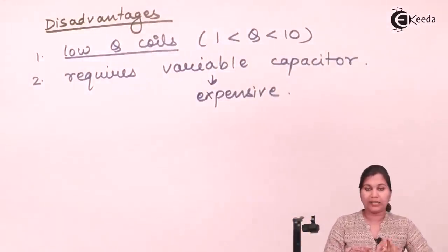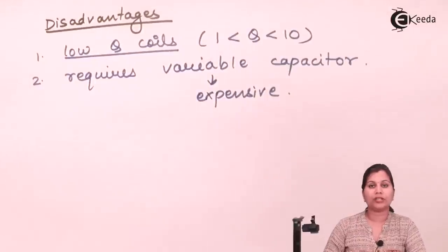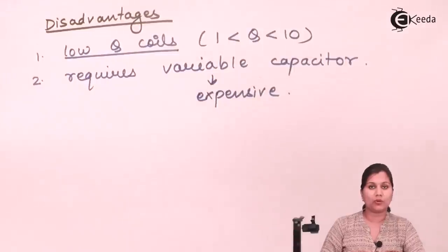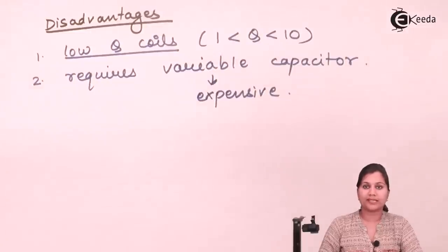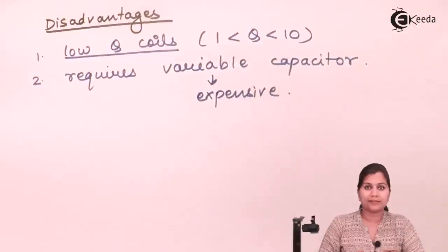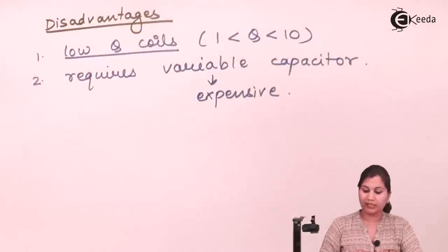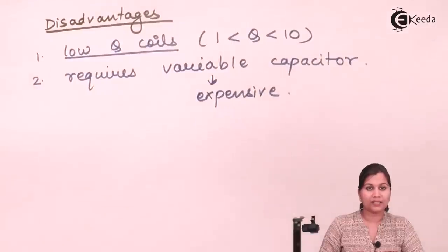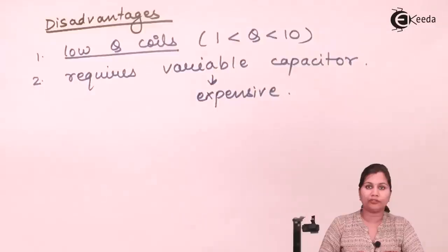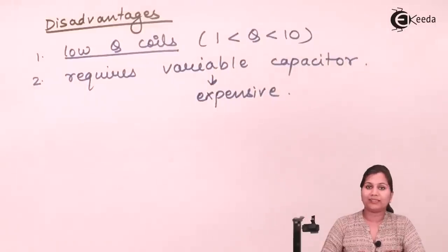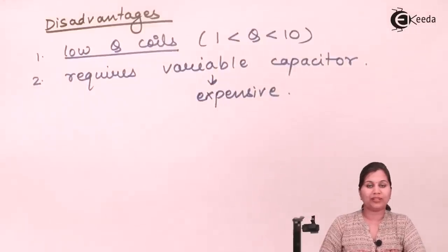In this video we studied the Maxwell inductance capacitance bridge, which measures inductance by comparing it with a standard capacitor. We saw its circuit diagram, balance equations, phasor diagram, and its advantages and disadvantages, and found the value of inductance in terms of capacitance. I hope this topic is now clear to you. Thank you.